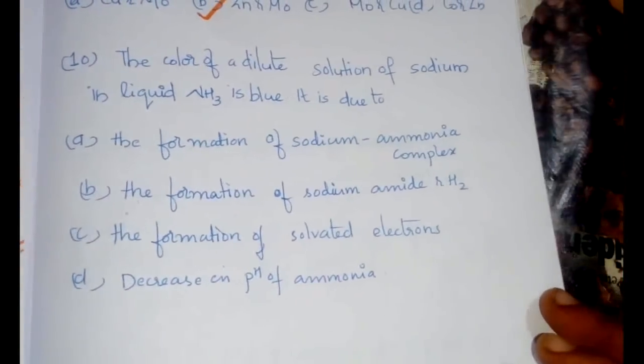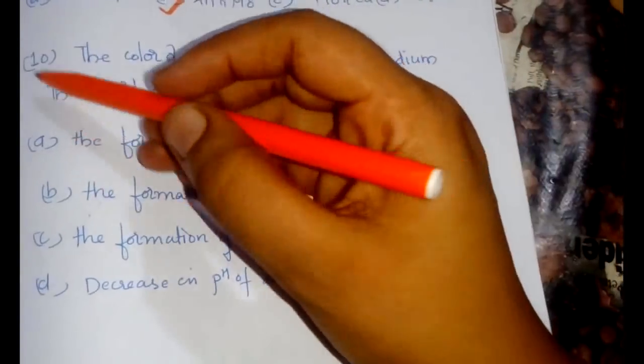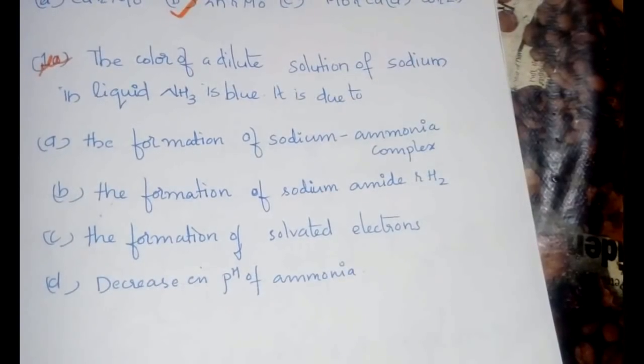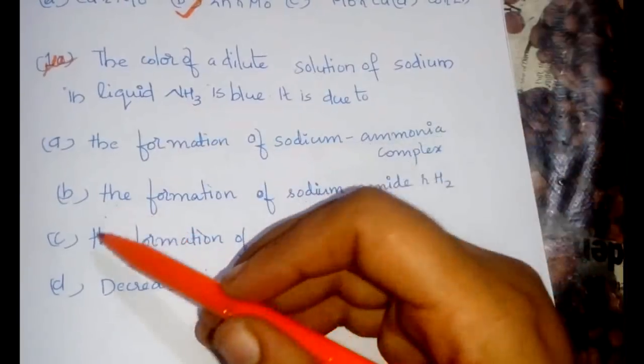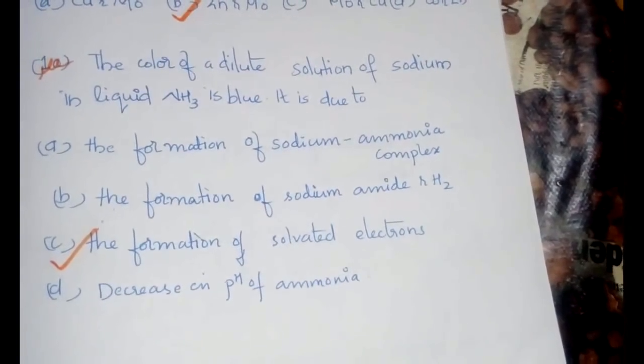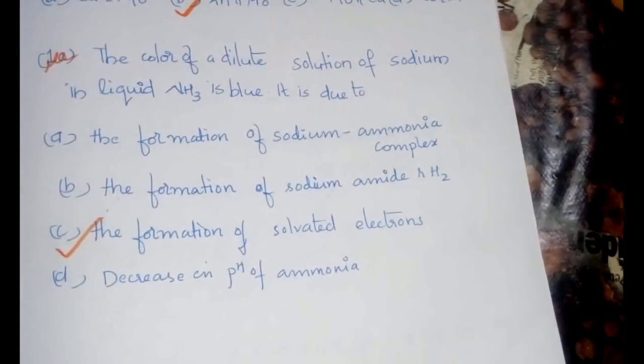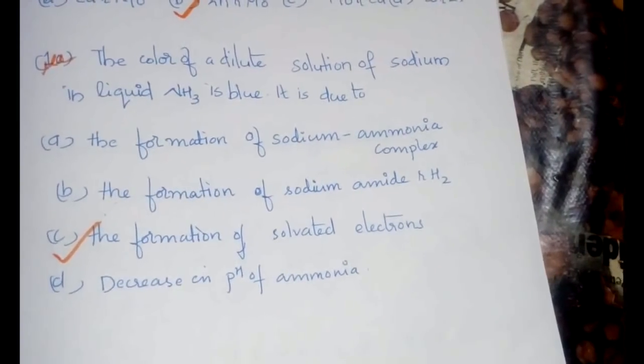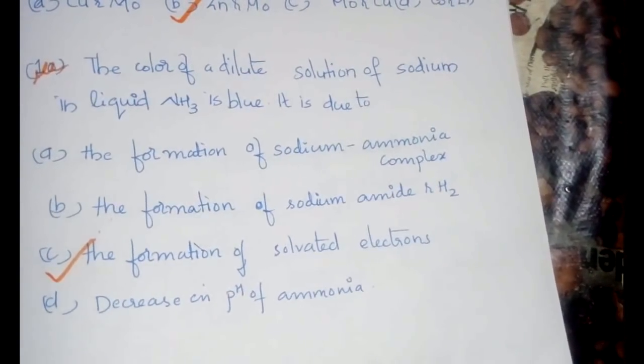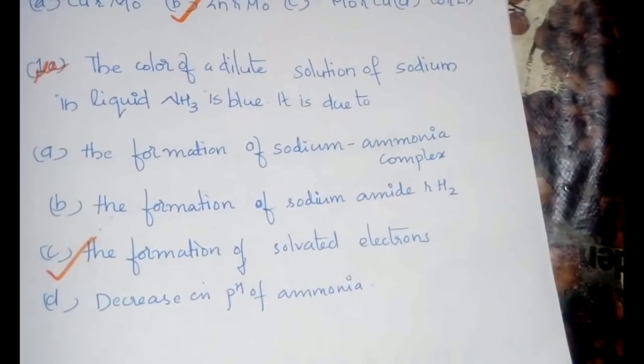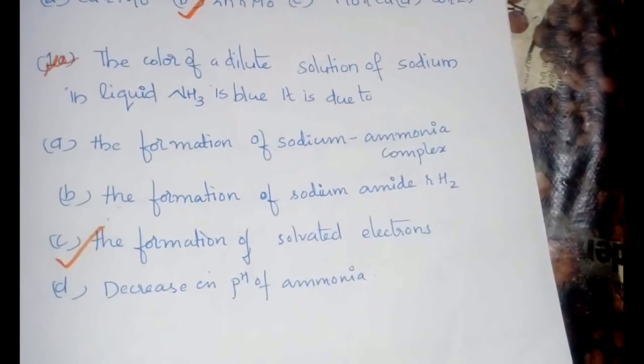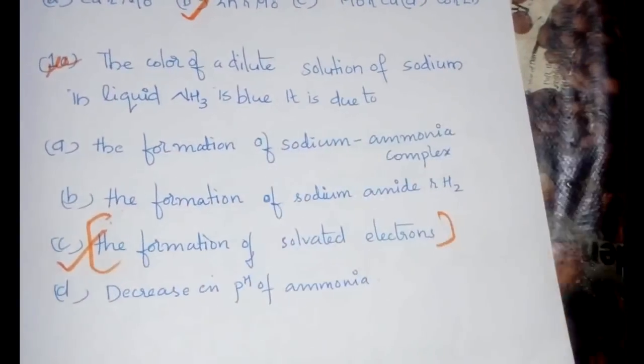The color of a dilute solution of sodium in liquid ammonia is blue. It is due to the formation of solvated electrons. This is a very important point in s-block elements. Solvated electrons result in high conductivity of this ammonia solution and the blue color is because of that. This reason should never be forgotten because it can be repeatedly asked in every exam.